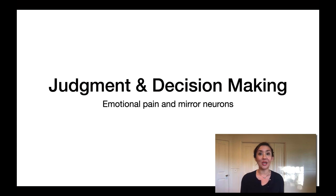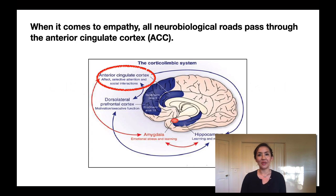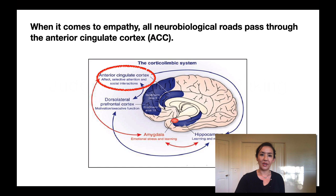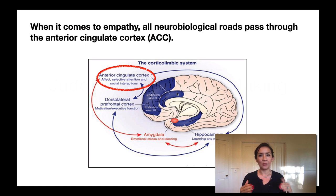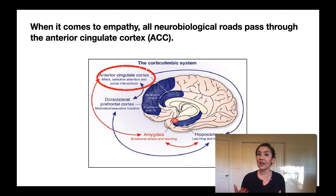Welcome back to Judgment and Decision Making. I'm Dr. Padilla. Now we're going to cover emotional pain and mirror neurons. When it comes to empathy, all neurobiological roads pass through the anterior cingulate cortex — it's highlighted here, sort of this part of the brain. This is an important component because it relates to pain and pain perception. I'm going to show you a short video that does a nice job describing some of the components of the ACC and how it relates to physical pain and social pain.